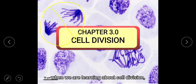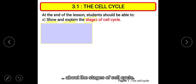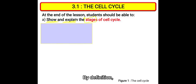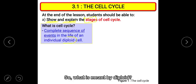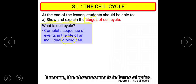When learning about cell division, students should be able to show and explain the stages of the cell cycle. First, let's define what is meant by cell cycle. By definition, cell cycle is the complete sequence of events in the life of an individual diploid cell. A diploid cell is when the cell consists of two sets of chromosomes, meaning the chromosomes are in the form of pairs.